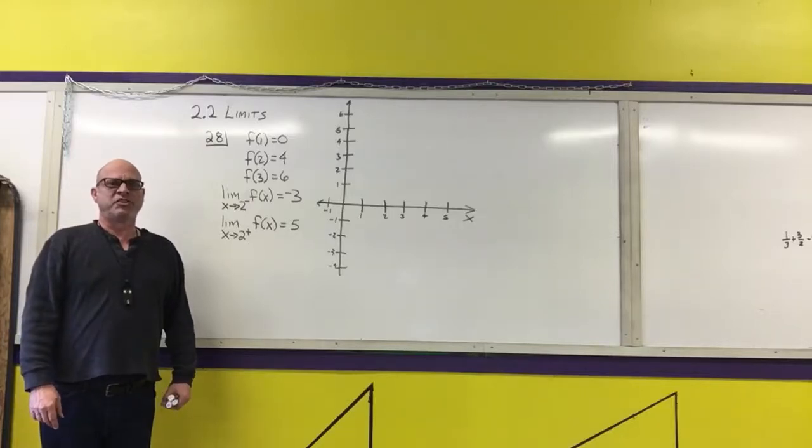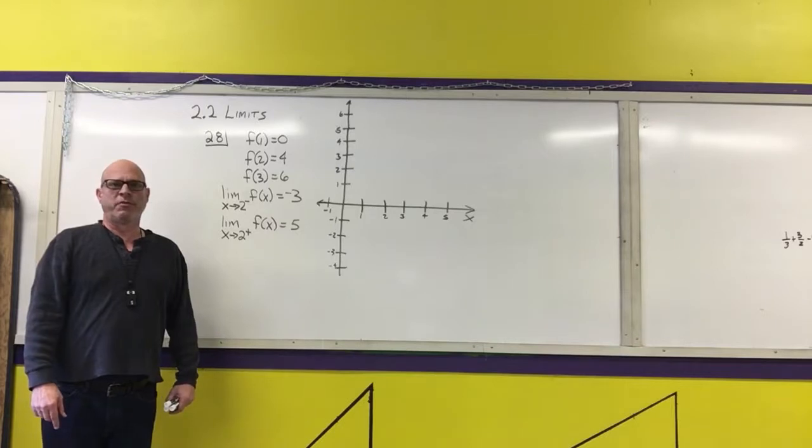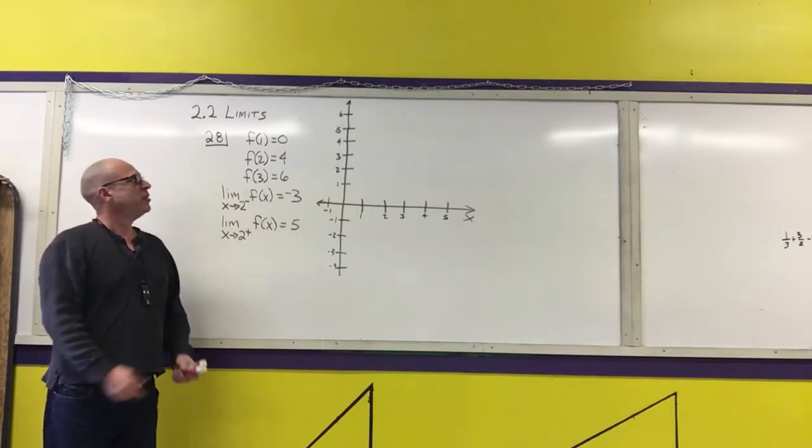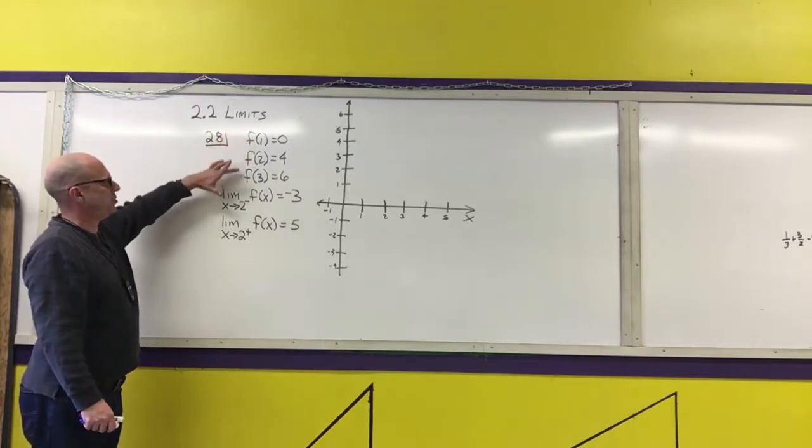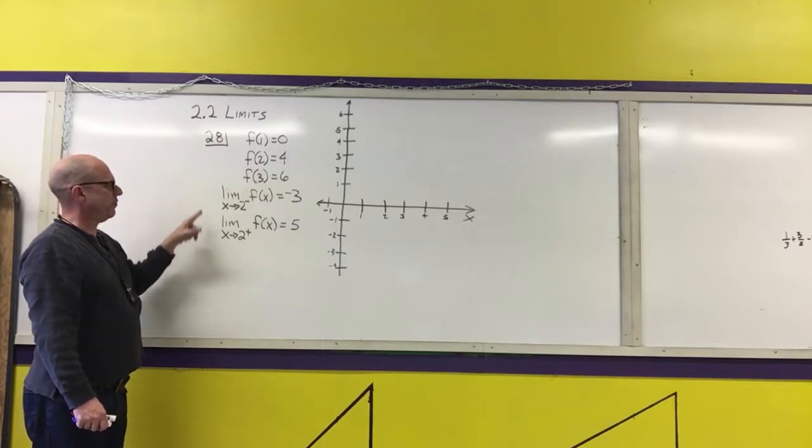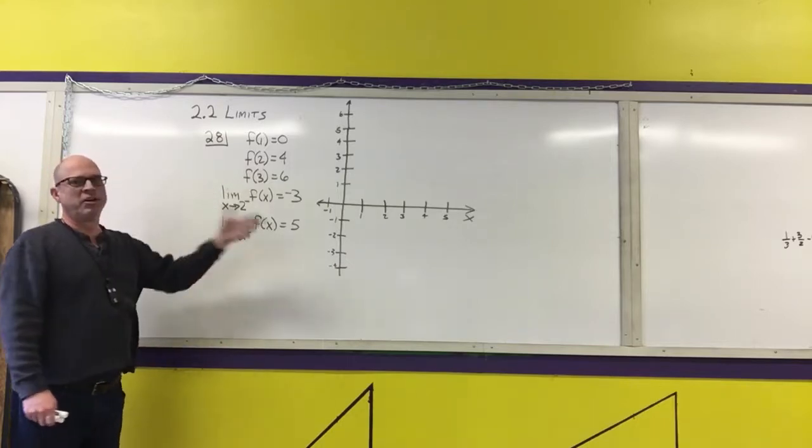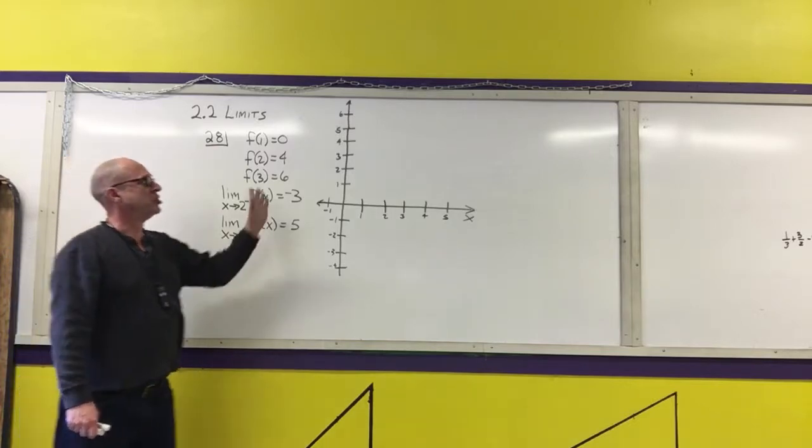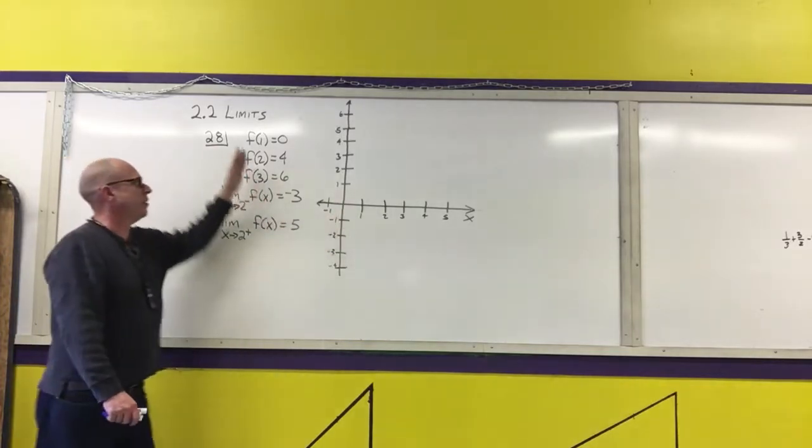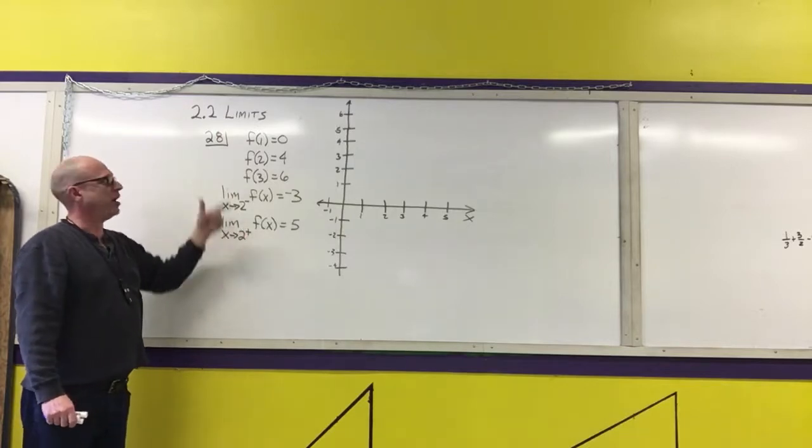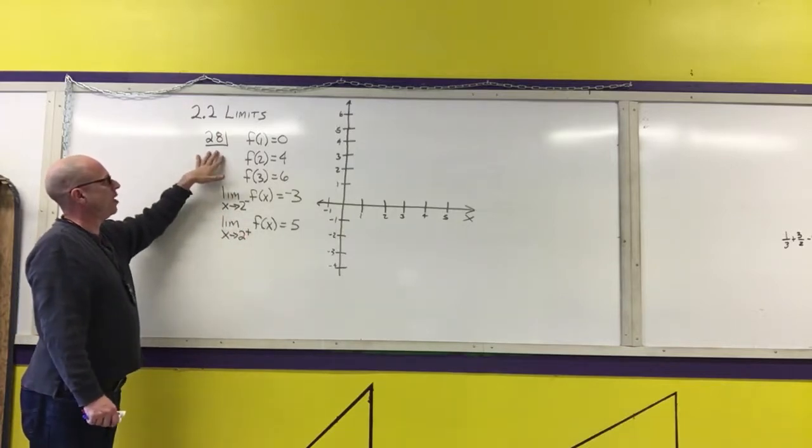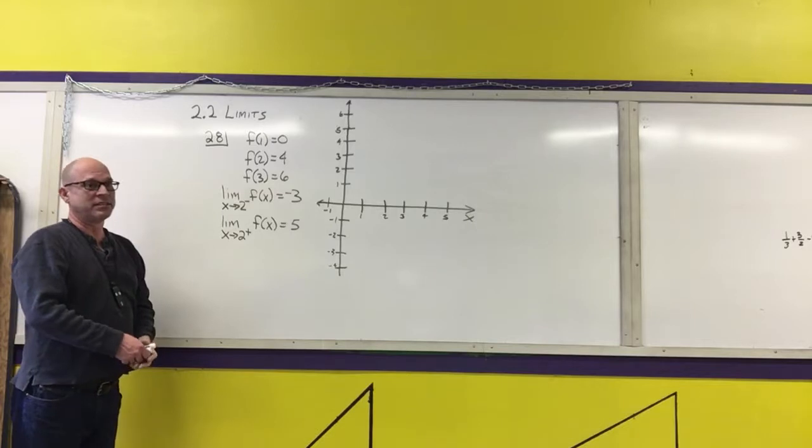One type of homework problem has you work backwards from what we've been doing. They give you particular values of a function and information about what the limits of that function does, and they want you to graph a function. I want you to understand there's probably an infinite number of graphs you can get with this set of conditions, and what I'm going to show for homework problem 28 is just one possibility.